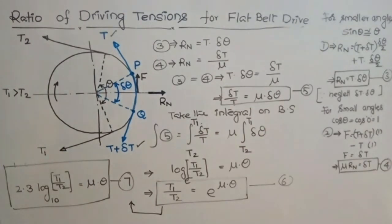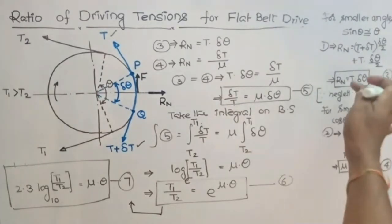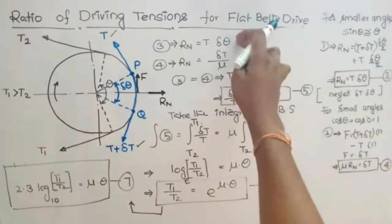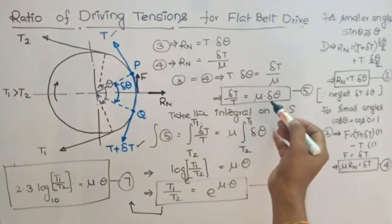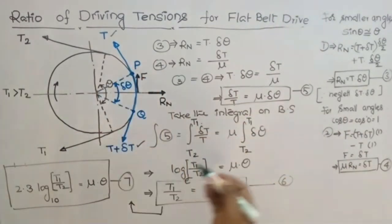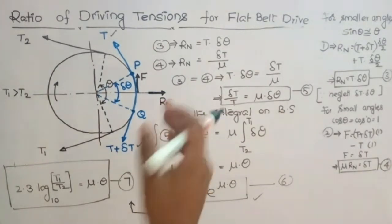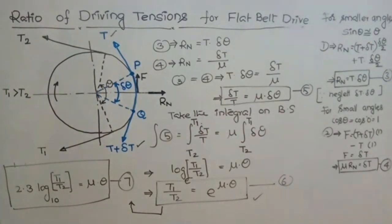So like this, you can find out the ratio of driving tensions in flat belt drive. Once you resolve the forces vertically and horizontally and simplify these equations, you will get equations in terms of Rn and mu Rn. Equating these gives delta T by T equal to mu delta theta. Integrating between limits of tight and slack side tensions gives T1 by T2 equal to e to the power mu theta. This is the most widely used equation in belt drives. Once we have T1 and T2 values, you can find out the power transfer. Thank you.